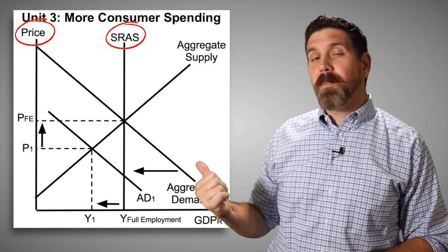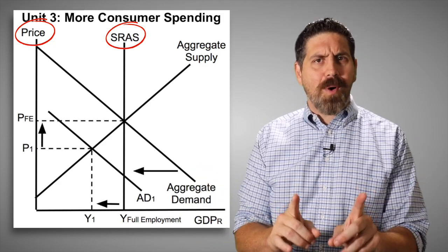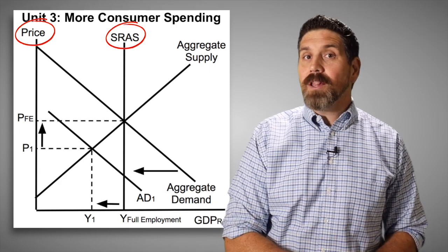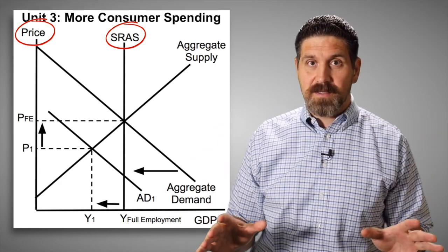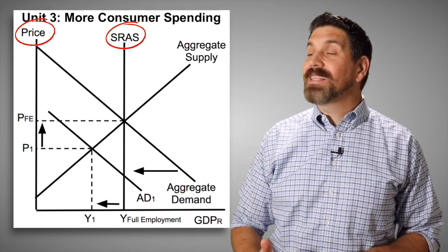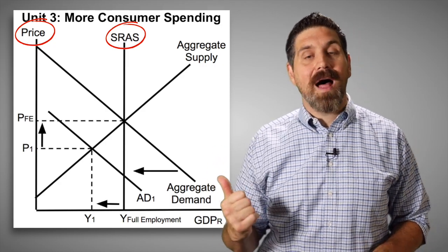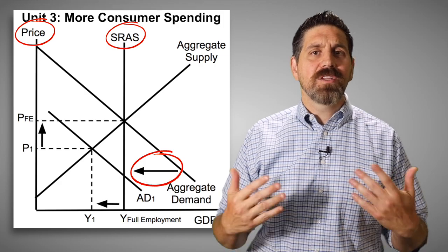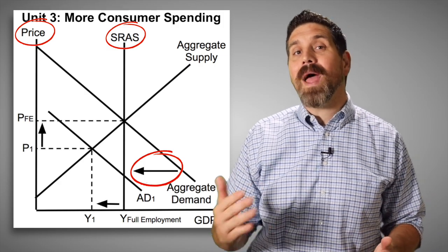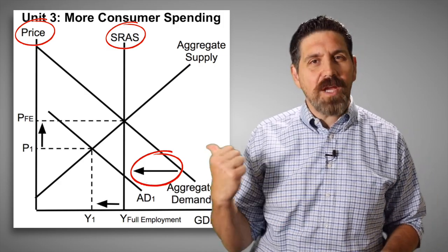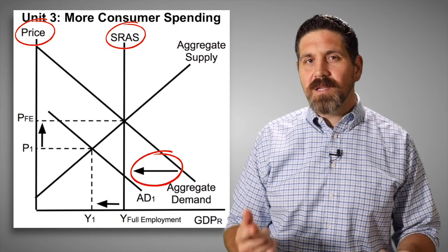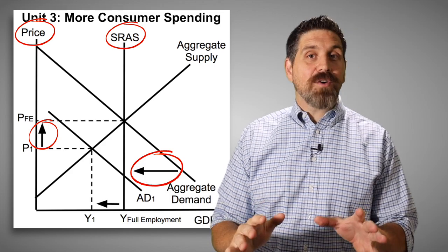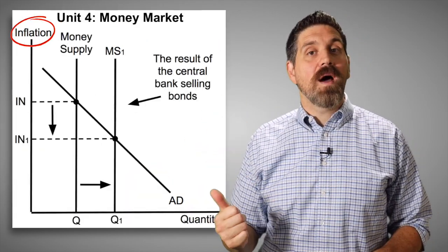For the next graph, we're looking at more consumer spending using aggregate demand and supply. The first problem is up here. It says price, that's wrong. We're looking at price level. We're not looking at a market, we're looking at all markets. And you can also see that vertical line is mislabeled. It says short-run aggregate supply. That's actually the long-run aggregate supply. And of course, an increase in consumer spending would shift aggregate demand to the right. It wouldn't shift it to the left. So that shift is wrong. But if there was a decrease in demand, the price level wouldn't go up. It would be going down. So that arrow is also wrong. So that graph has four things wrong.